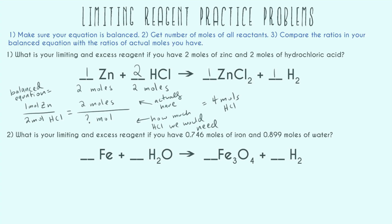To use up the two moles of zinc we have, we would need four moles of HCl, but we were only given two moles of HCl. We do not have enough HCl to use all of the zinc, so HCl is our limiting reagent and zinc is our excess reagent.